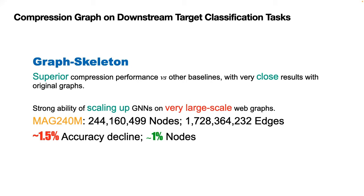And it also presents very strong ability of scaling up the GNNs on very large graph scales. For example, on the MAG 240 million dataset, our method yields less than 1.5% decline, but with only near 1% nodes of the original graph.